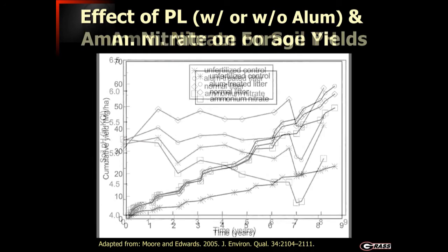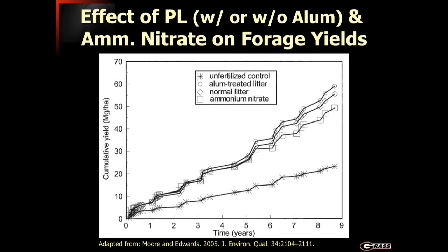In terms of overall yields, there really wasn't a whole lot of difference between the alum-treated litter and the normal litter over those several years of total yield — in this case studying tall fescue forage production. You can definitely see the difference with the unfertilized control and some separation with areas receiving only ammonium nitrate, due to lack of fertility, other macronutrients, and the acidifying effect of nitrogen fertilizers.